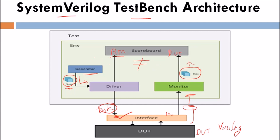Next is the environment. The environment contains all the verification components like generator, driver, scoreboard, and monitor. It makes the verification more flexible and scalable because more components can be plugged in to the same environment in future projects.